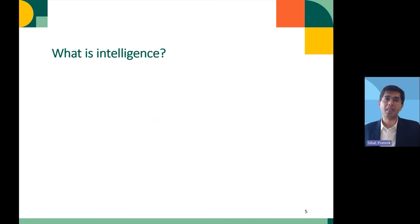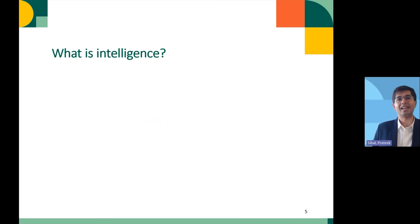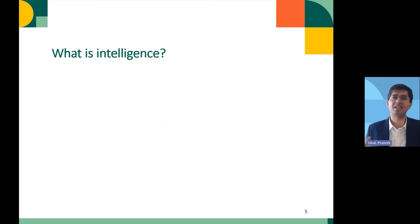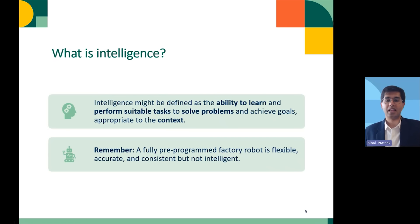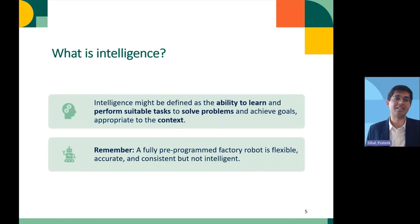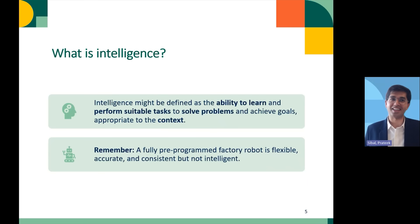Before we dive deeper, let's start with the question: what is intelligence? The ability to learn, use our knowledge to solve problems, in a manner that is appropriate to the context, can be defined as intelligence. For instance, throwing oil on a car that has caught fire is certainly not intelligent.